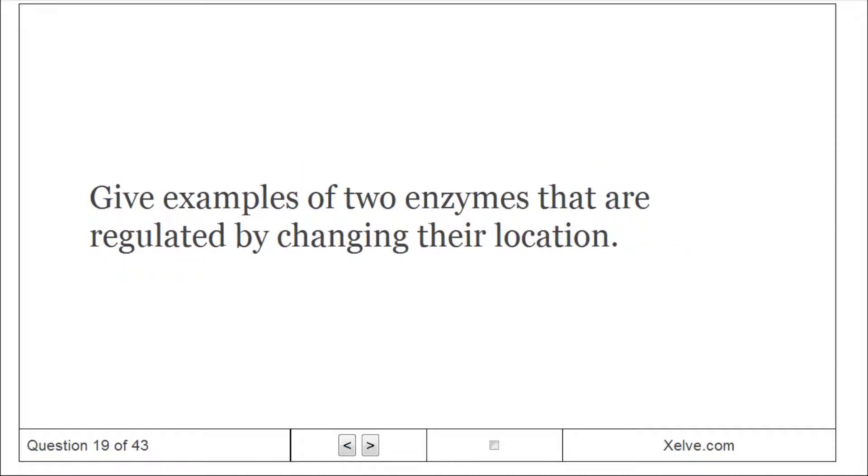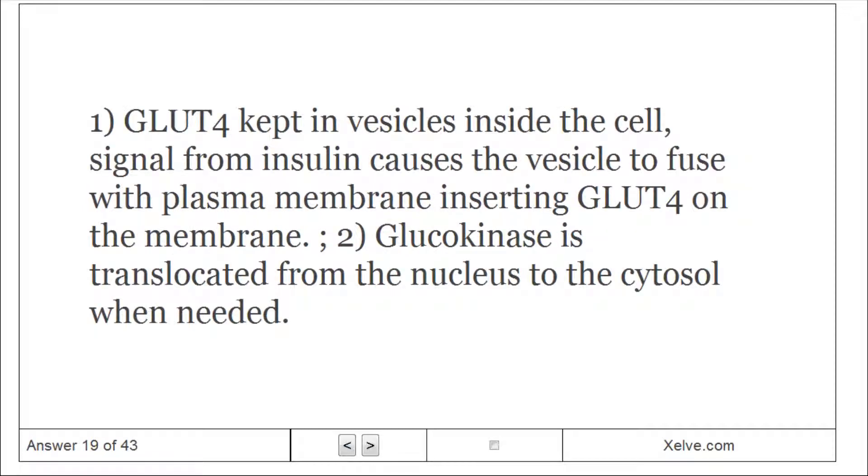Give examples of two enzymes that are regulated by changing their location. 1. Glut4 kept in vesicles inside the cell. Signal from insulin causes the vesicle to fuse with plasma membrane, inserting glut4 on the membrane. 2. Glucokinase is translocated from the nucleus to the cytosol when needed.